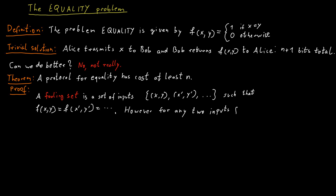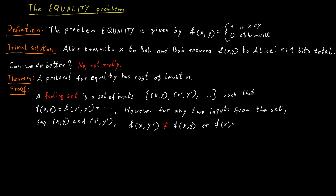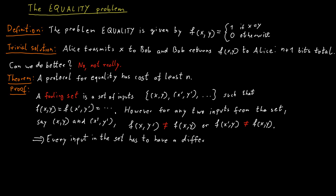However, if I take two such inputs — x, y and x prime, y prime — and I mix and match them, so I take x and y prime or I take x prime and y, then one of these or both should result in a different function value. So the function value for f of x and y should be equal to f of x prime and y prime, but f of x and y prime or f of x prime and y should be different. A successful communication protocol that solves this particular function has to distinguish between all the different inputs in the fooling set, so the transcripts need to be different for every different input in the fooling set.